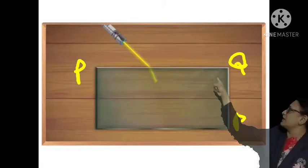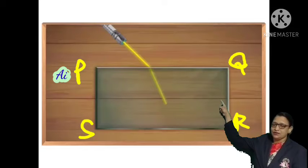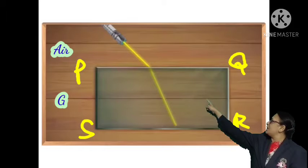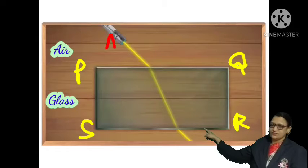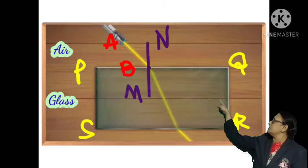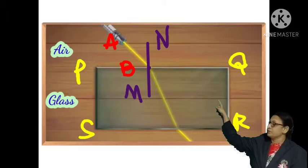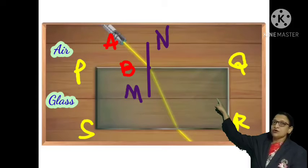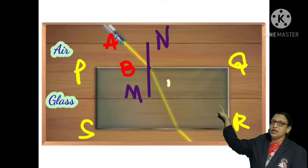Here a light ray falls on a glass slab PQRS. The light falling on the surface between the glass and air is ray AB. Point B is the point of incidence, where we have drawn the normal NBM.